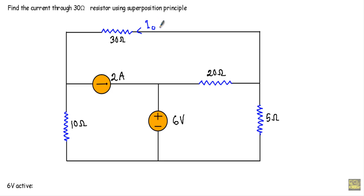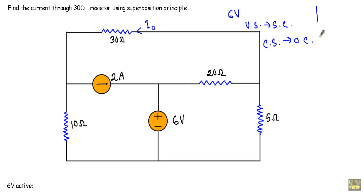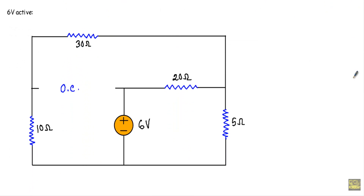To use the superposition theorem, I have to keep the current source and the voltage source active separately. Once I keep the 6 volt source active, any other voltage sources are replaced with a short circuit and any current sources are replaced with an open circuit. Similarly, when keeping the 2 ampere current source active, voltage sources are replaced by short circuit. So first, I keep the 6 volt source active and replace the 2 ampere current source with an open circuit, removing it from the network. Our circuit will then look like this.